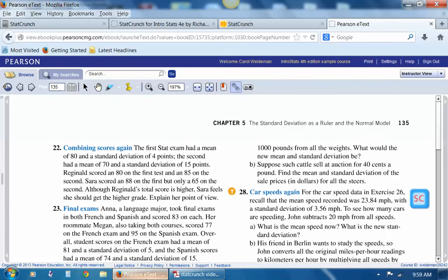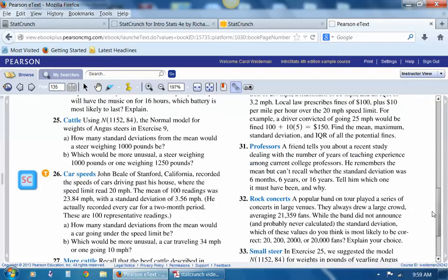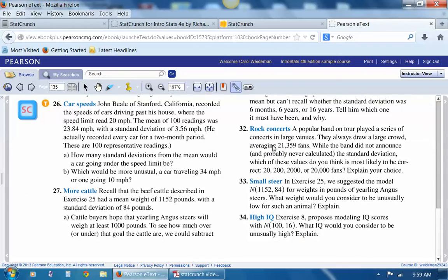So I'm in the e-book first, and I'm going to work on a couple problems here. The first one I'm going to look at is Problem 26. It tells us that John Beale of California recorded the speeds of cars driving past his house, where the speed limit was posted at 20 miles per hour. He took 100 readings and got an average speed of 23.84 with a standard deviation of 3.56.